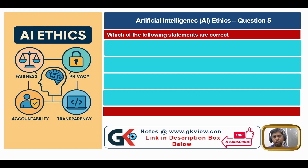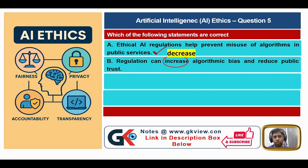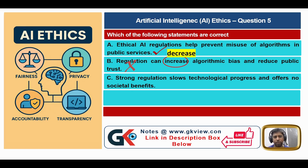Question number five: which statements are correct? Statement A: ethical AI regulations help prevent misuse of algorithms in public services — this is true. Statement B: regulation can increase algorithmic bias and reduce public trust — this is false; 'increase' is wrong, it should be 'decrease.' Regulation decreases algorithmic bias, which increases public trust.